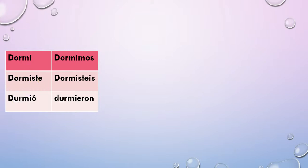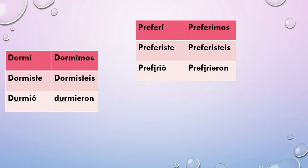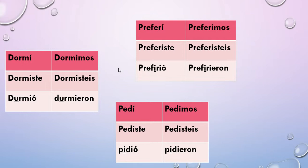Here are some conjugations. For DORMIR: regular, regular — only in third person singular and plural does the O change to a U. This is very different from present tense stem changing where you would have the boot verb formation; this is not a boot or shoe formation at all. For PREFERIR: in present tense it goes E to IE, but that doesn't matter — it's still an IR stem-changing verb. So in the él/ella and ellos forms, my E changes to an I: PREFIRIÓ and PREFIRIERON. And there you have it.